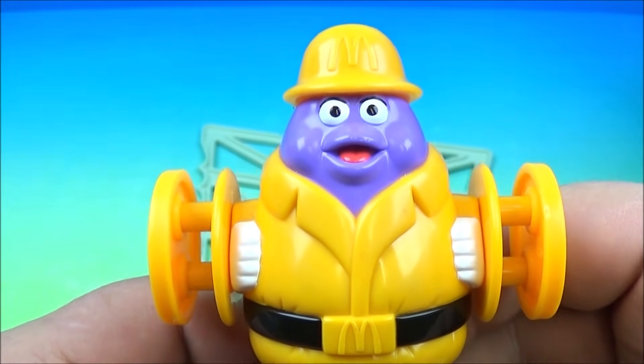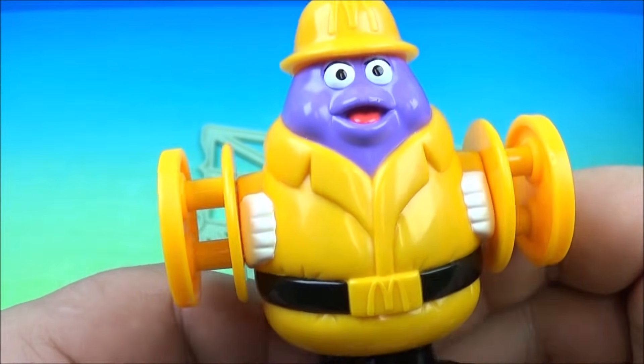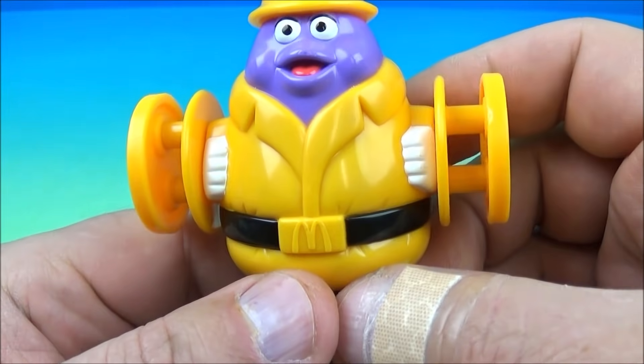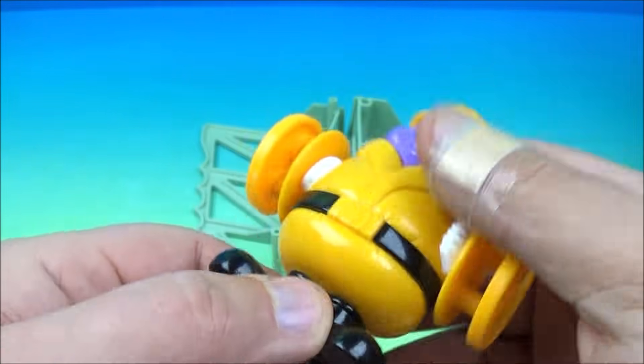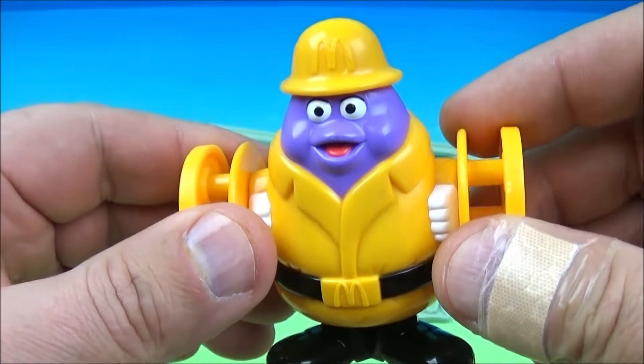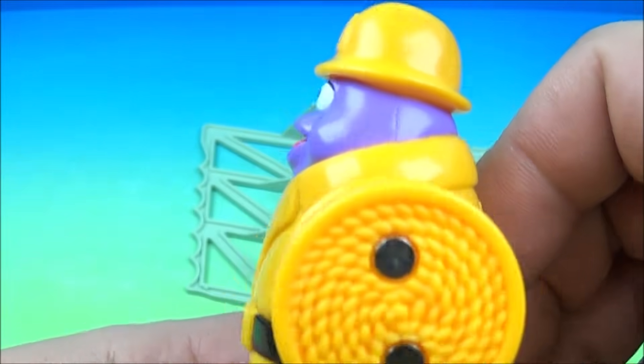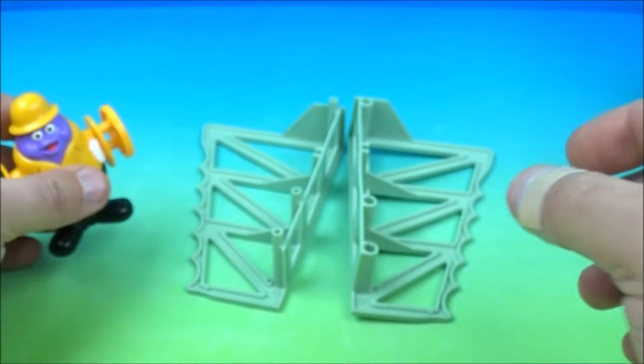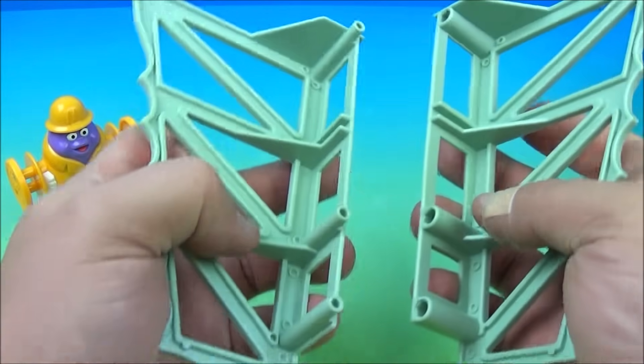And the fourth one in the set is Grimace Hefty Roller. So it looks like he's holding some wheels on his arms and it is really heavy. No moving bits at all. And of course, he's got his little hard hat on and here is the little pieces that came with the set. So you just basically force these together and they're tabs.